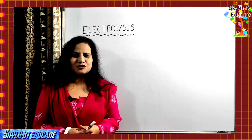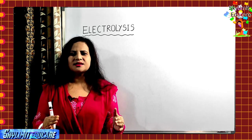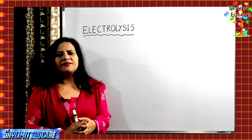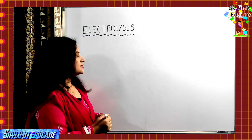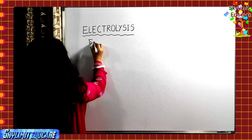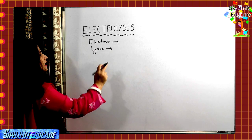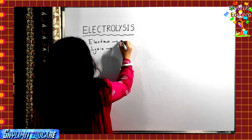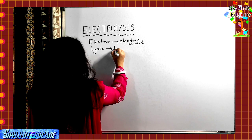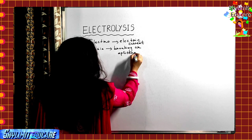Welcome dear students. Today we'll be discussing a new topic: electrolysis. We'll cover the various terms related to electrolysis and especially the electrolysis of water. The word electrolysis is derived from two words: 'electro', meaning with the help of electric current, and 'lysis', meaning breaking or splitting.